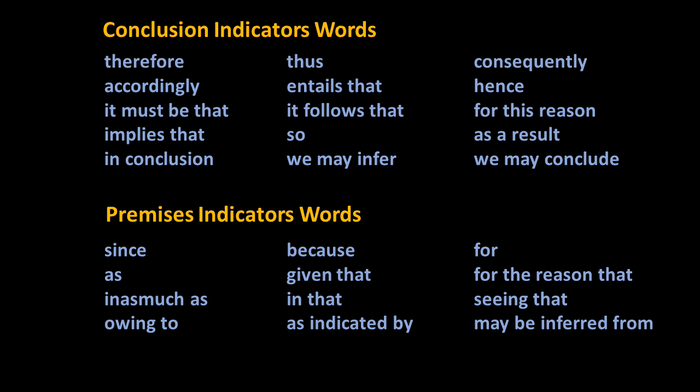Likewise, it is useful to take note of words that typically indicate premises. These are sometimes called premise indicators. Premise indicators include words such as: since, because, for, as, given that, for the reason that, inasmuch as, in that, seeing that, owing to, as indicated by, and may be inferred from. These lists are only samples to help you parse any block of text in order to extract the argument, and should not be taken as exhaustive or authoritative.